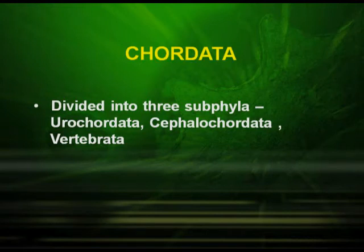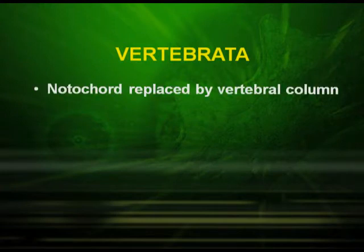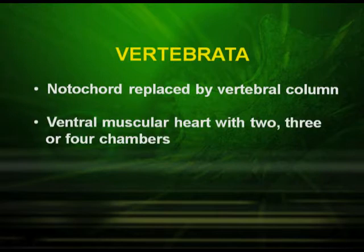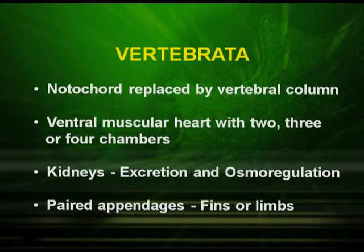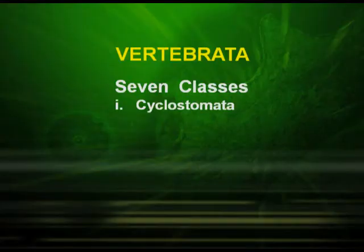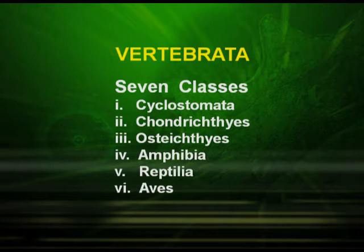Chordata is divided into three subphyla: Urochordata, Cephalochordata, and Vertebrata. All the higher organisms come under Vertebrata. The characteristics exhibited by the Vertebrata are: their notochord is replaced by a vertebral column, they have a ventral muscular heart which may be two, three, or four chambered, kidneys are present for excretion and osmoregulation, and they have paired appendages which are fins or limbs. They include seven classes: Cyclostomata, Chondrichthyes, Osteichthyes, Amphibia, Reptilia, Aves, and Mammalia.